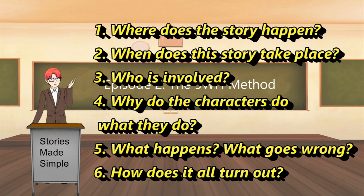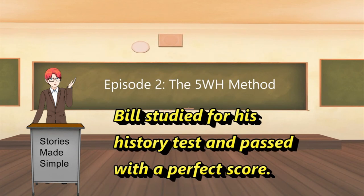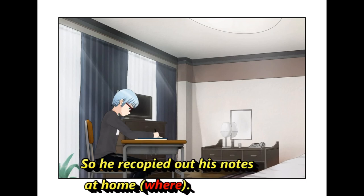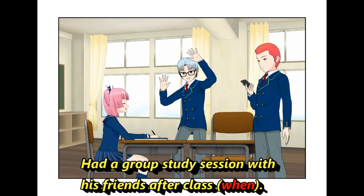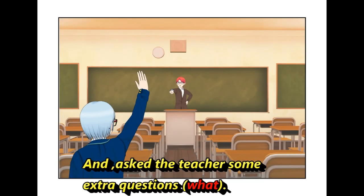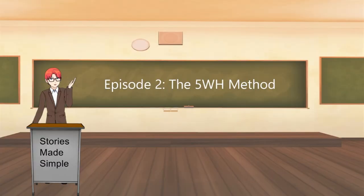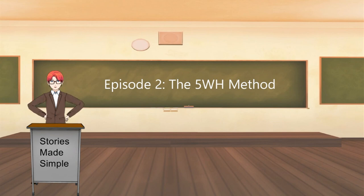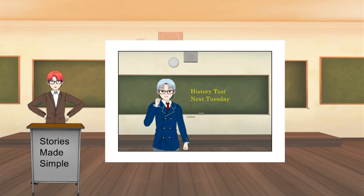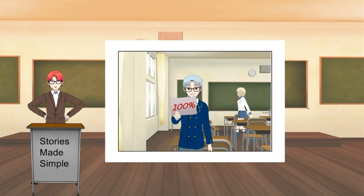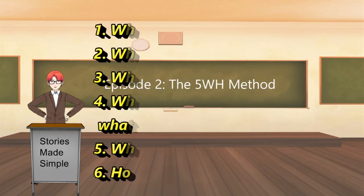Let's look at an example based on Bill's story. The original sentence was: Bill studied for his history test and passed with a perfect score. Let's see if we can add a few details. Bill, who wanted to get a good score on his history test — why — recopied his notes at home — where — had a group study session with his friends after class — when — and asked the teacher some extra questions — what. As a result, he got a perfect score on the test — how it all turned out. Now, could you do what Bill did and get a good score? I bet you could, and I bet anyone could. Now you have learned from Bill's story and learned from his example. It also became a lot more interesting, because we naturally become curious when we see a character with a goal. A question automatically pops into our heads: how will this person complete this goal? And then we pay attention to find out. That's called a dramatic question, and we'll talk about those another time.